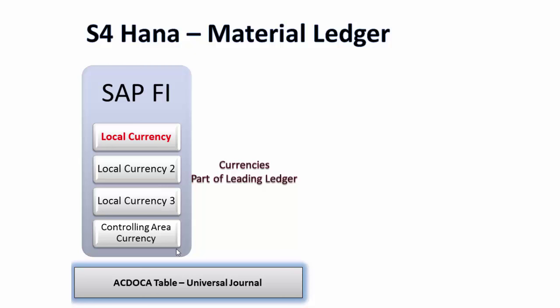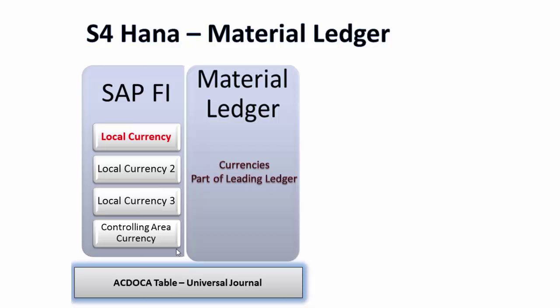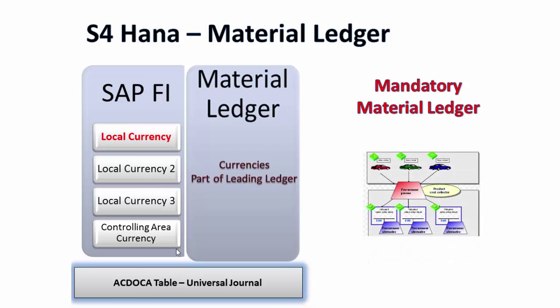Material ledger uses all the currencies that are part of your leading ledger, and material ledger becomes part of your ACDOCA table. This means material ledger is obligatory in the SAP S/4 HANA scenario — S/4 HANA architecture activates material ledger automatically as part of your conversion. Material ledger being mandatory, actual costing — used for actual cost — feeds into your COPA module as well as for inventory valuation, though actual costing itself remains optional.